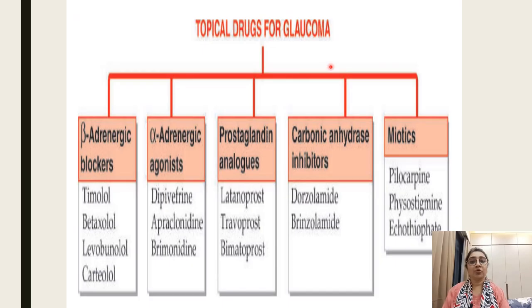Topical drugs for glaucoma fall into five groups: beta blockers, alpha agonists, prostaglandins, carbonic anhydrase inhibitors, and miotics.